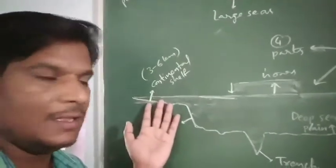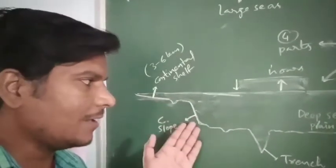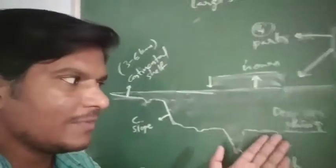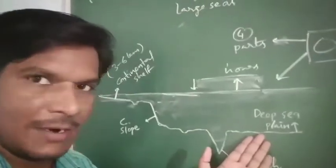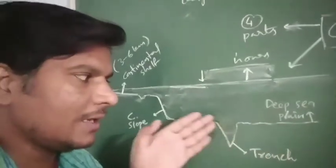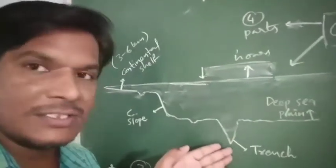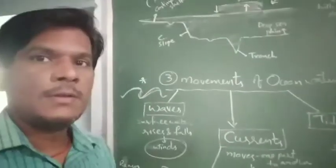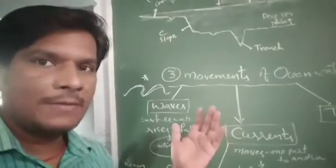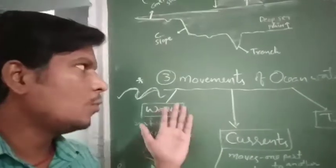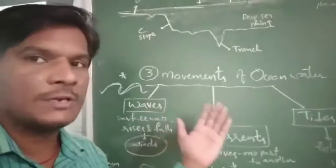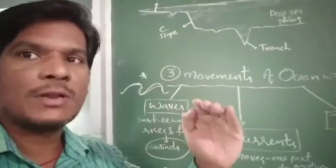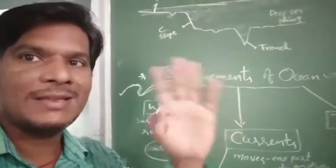So ocean relief — the ocean underground — is divided into four parts: starting with the continental shelf, then the continental slope, then the deep sea plain, and finally the trenches as the deepest places. Next, we have the topic of movements of ocean water. Ocean surface water moves in three ways: waves, currents, and tides.